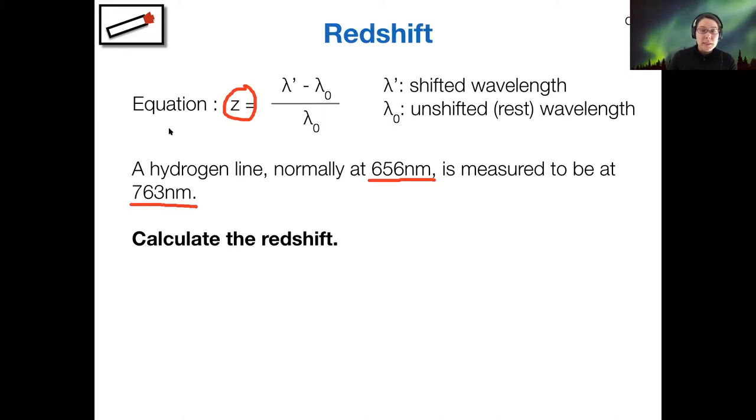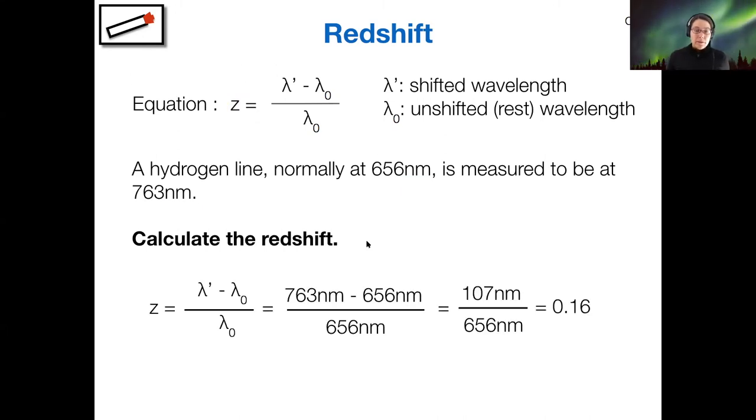So 0.16, right. Let me clear away my drawings. All right. So yeah, if I put 763, the shifted wavelength, and then 656 nanometers is my rest wavelength, divide that by the rest wavelength, then I get 0.16. So that's the redshift here.